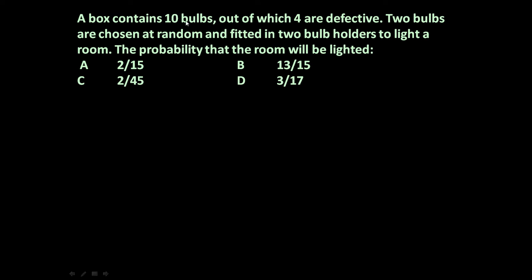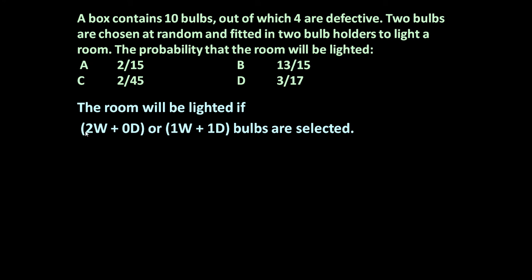There are 4 options given. Total 10 bulbs are there, we have to select 2, but there are 4 defective bulbs. The room will be lighted if we select 2 bulbs such that both of them are working — 2 working bulbs and 0 defective — or 1 working and 1 defective. If 2 defective bulbs are selected, the room will not be lighted, and we have to determine the probability that the room will be lighted.